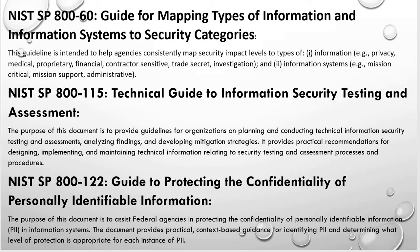NIST SP 800-60 Volume 1 and 2 is the Guide for Mapping Types of Information and Information Systems to Security Categories. This publication guides you on how to categorize — identifying the information types under each system. It also explains the steps of categorization: how to identify information types, assign impact level values, and determine your high watermark.